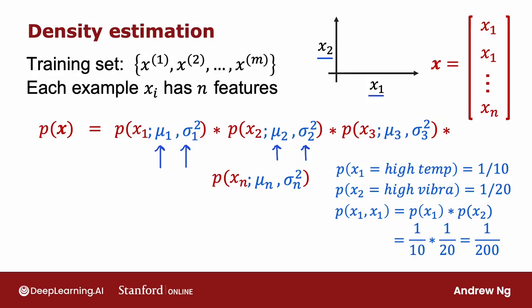A somewhat more compact way to write this equation is to say that this is equal to the product from j equals 1 through n of p(xⱼ) with parameters μⱼ and σ²ⱼ. And this symbol here is a lot like the summation symbol, except that whereas the summation symbol corresponds to addition, this symbol here corresponds to multiplying these terms over here for j equals 1 through n.